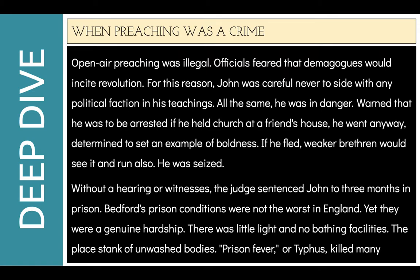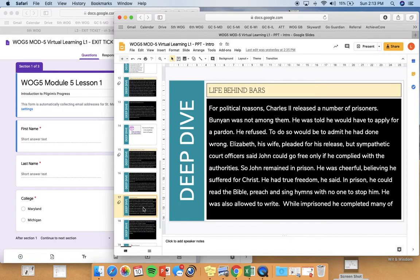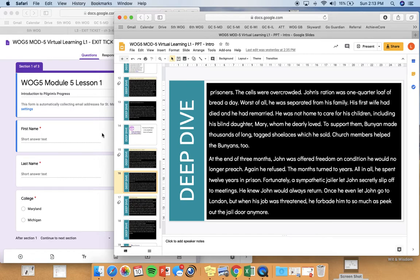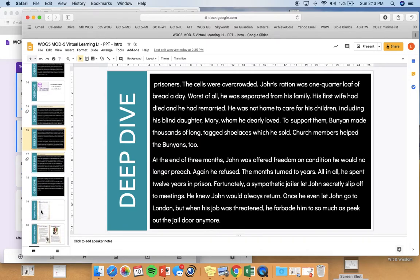Warned that he was to be arrested if he held church at a friend's house, he went anyway, determined to set an example of boldness — if he fled, weaker brethren would see it and run also. He was seized. Without a hearing or witnesses, the judge sentenced John to three months in prison. Bedford's prison conditions were a genuine hardship: little light, no bathing facilities, the place stank of unwashed bodies, and prison fever killed many prisoners. Cells were overcrowded and John's ration was one quarter loaf of bread a day. Worst of all, he was separated from his family, including his blind daughter Mary, whom he dearly loved. To support them, Bunyan made thousands of long tagged shoelaces, which he sold.